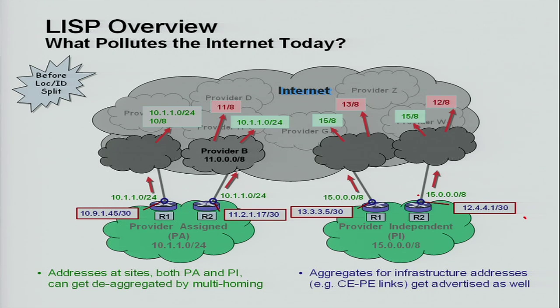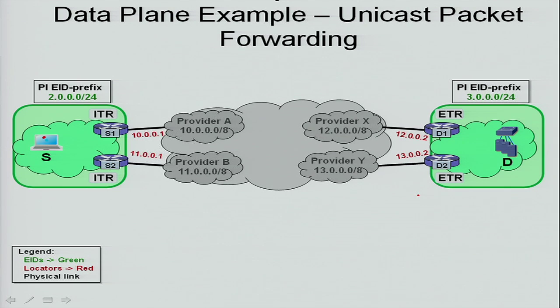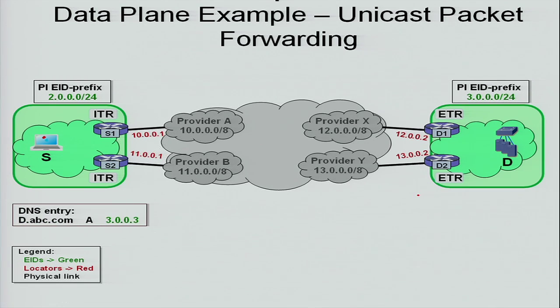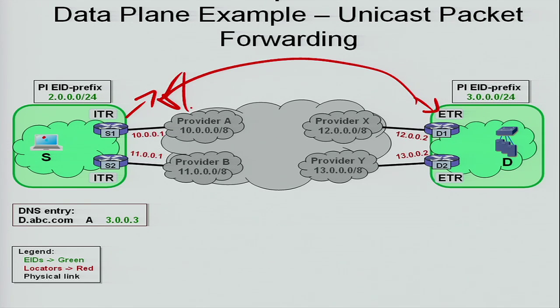What LISP tries to do is take these routes that people are injecting into the internet and remove them. And so if the route's not in the internet, how does the site find it? That's the biggest single question. What we do with LISP is we have a mapping and lookup function. We try and remove these entries from the routing table and put them in a mapping system. The site queries this mapping system to find the mapping, and then the mapping is returned back to the original site. Are we adding any extra latency? We add latency for the very first time a site wants to talk to another site. After that, all subsequent communications are exactly the same as today.